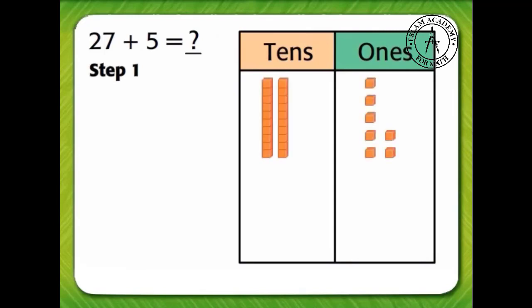First, use 2 tens and 7 ones to show 27. Use 5 ones to show 5.